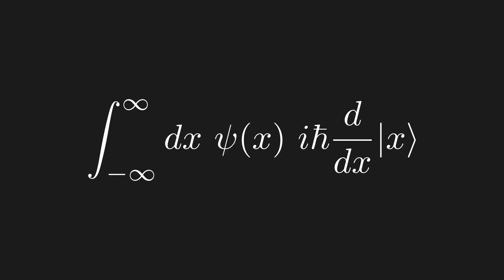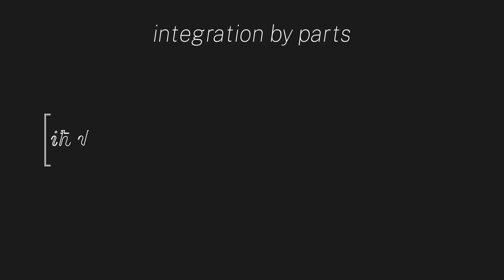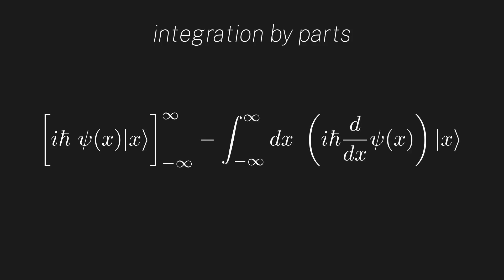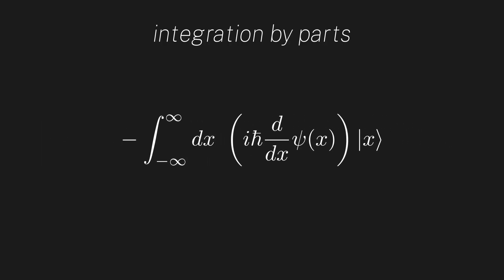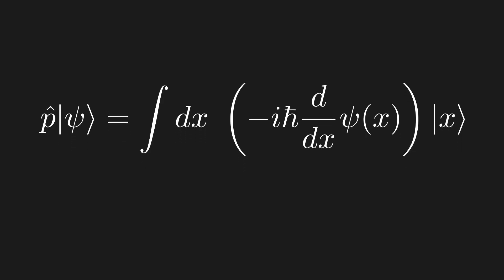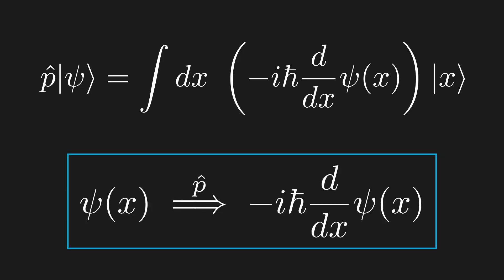Now here is where we need to be a little clever. We use integration by parts to move the derivative from the ket to the wave function. When integrating by parts we first get a boundary term evaluated at plus/minus infinity, then subtract the integral where we switched the derivative. If our wave function is to be normalizable, then ψ must vanish at plus/minus infinity, so the boundary term equals zero. We've found that when acting the momentum operator on a quantum state, it changes the wave function by taking its derivative and multiplying by −iħ. This is something usually introduced in the first few chapters of every quantum textbook, but rarely do they show where it comes from.